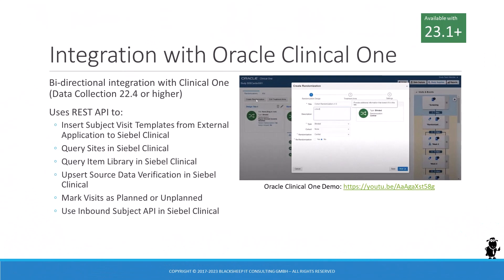Let's take a look at the pre-built integration with Oracle Clinical One. This integration is built on top of the Siebel REST API and supports bi-directional data synchronization between Siebel CRM and Clinical One for various entities, such as subject visit templates, sites, and item library. Information about how to set up and use the new integration touchpoints is included in the updated Clinical Trial Management System guide and REST guide in Siebel Bookshelf.